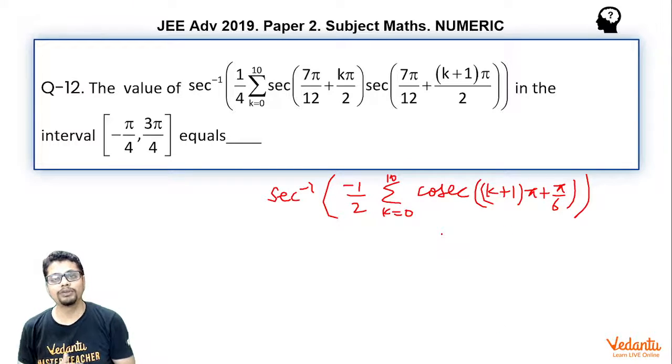Now, if you see carefully, cosec even integral multiple of pi plus theta is cosec theta and cosec odd integral multiple of pi plus theta is minus cosec theta. So, essentially whenever k plus 1 is even, this expression would be cosec pi by 6 and whenever k plus 1 is odd, this expression would be minus cosec pi by 6.